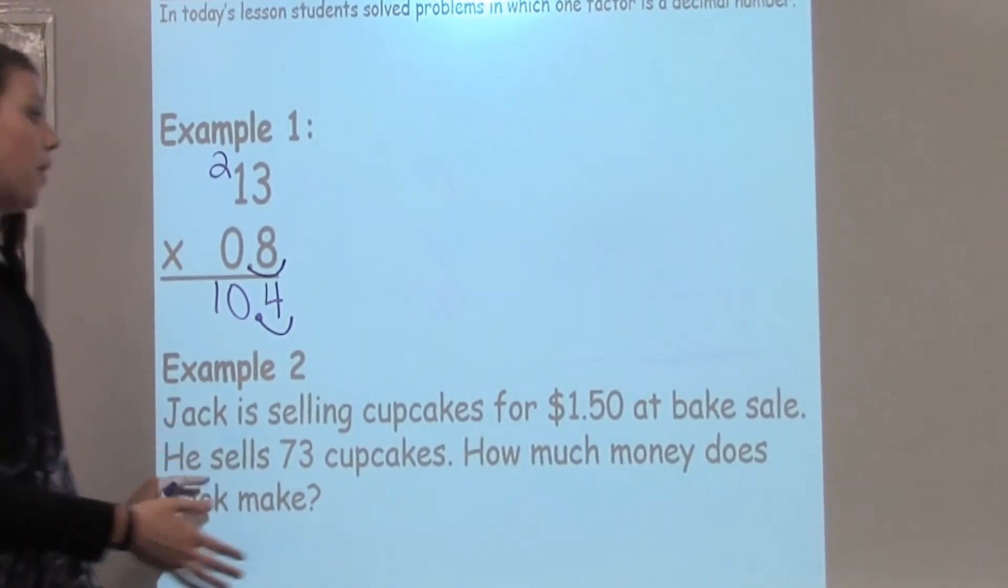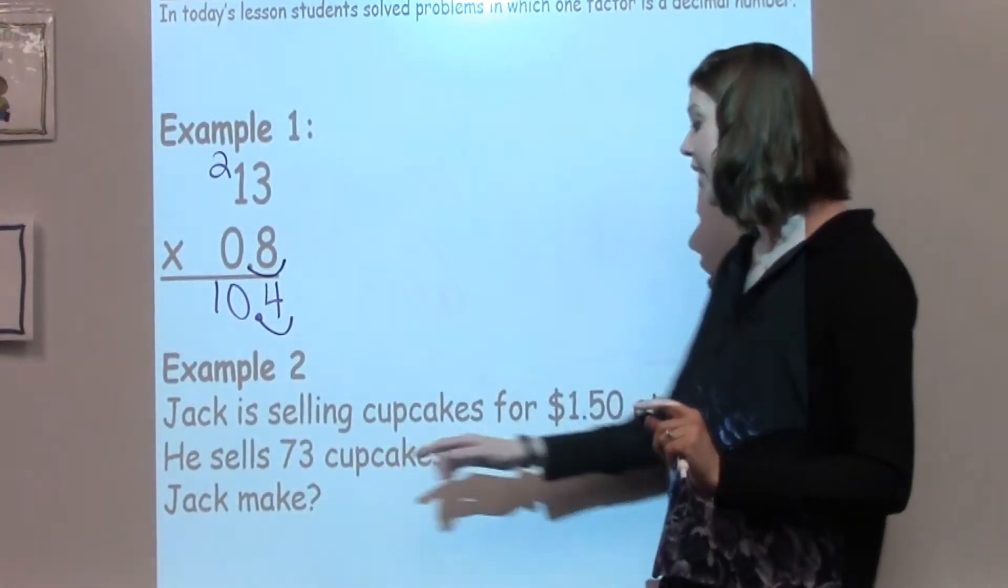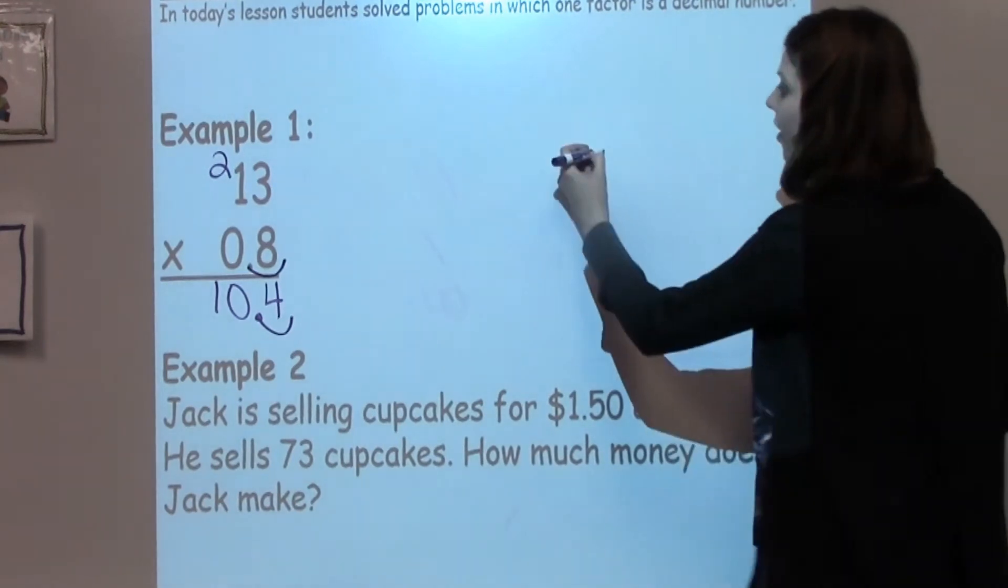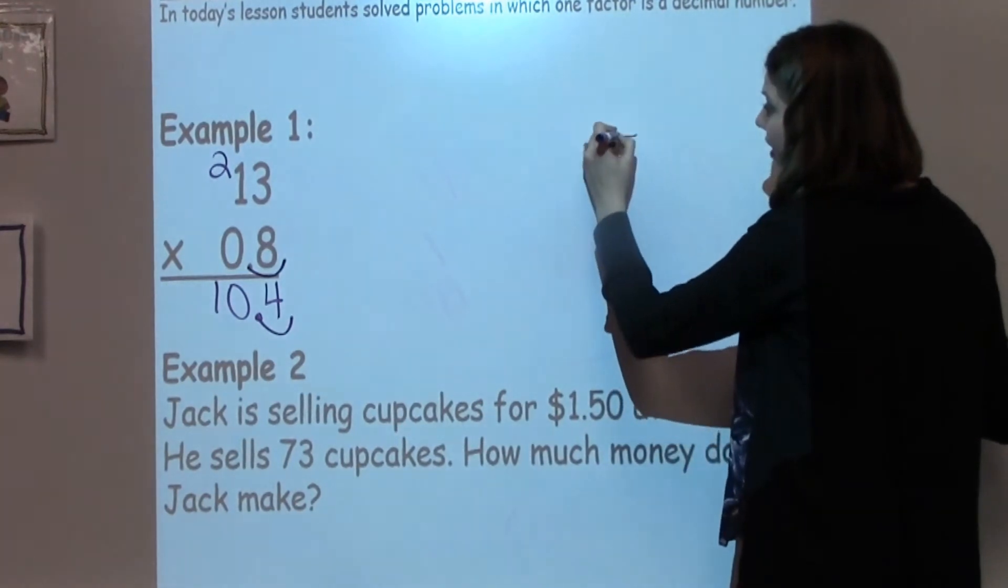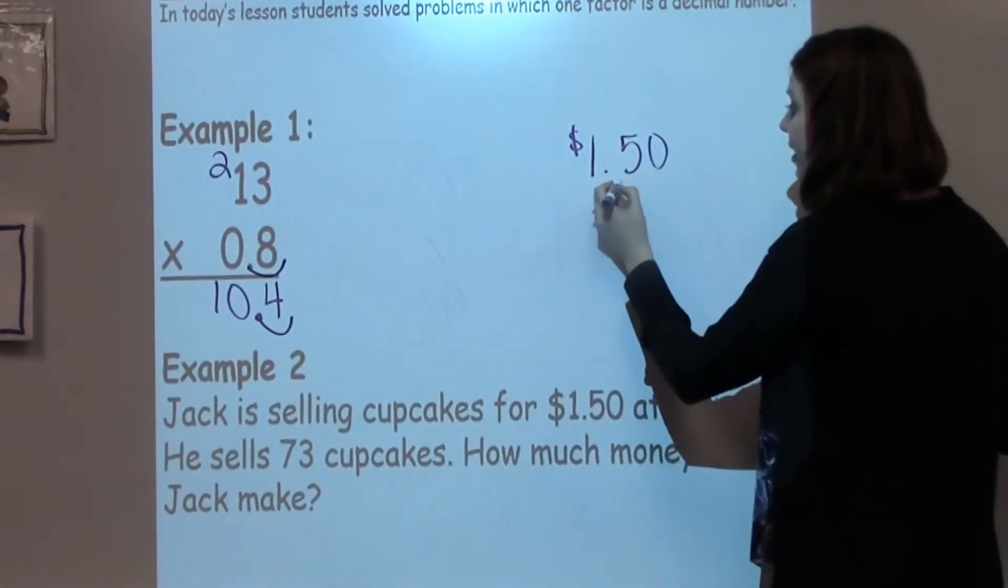Okay, well, I know from this problem, I have each cupcake is going to cost $1.50 and he sells 73. So, I'm going to go ahead and pull this problem up here. So, I have $1.50 per cupcake and he sells 73 of them.